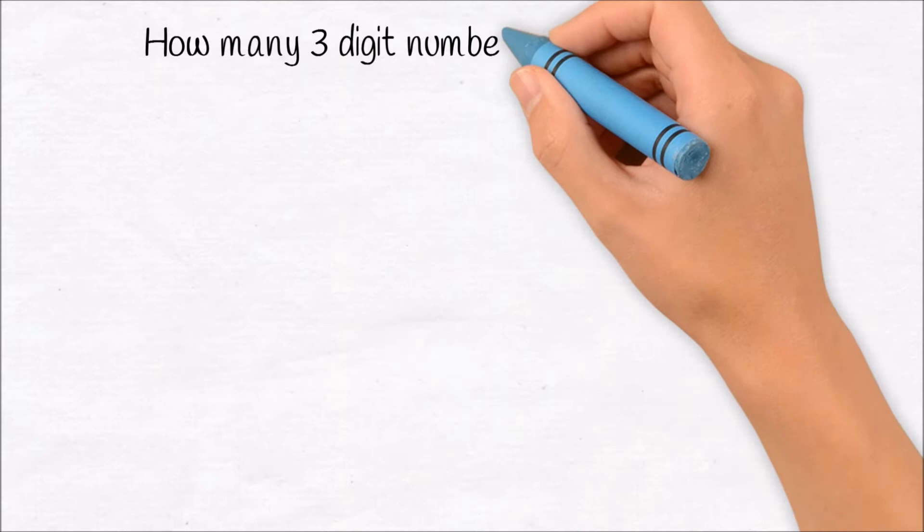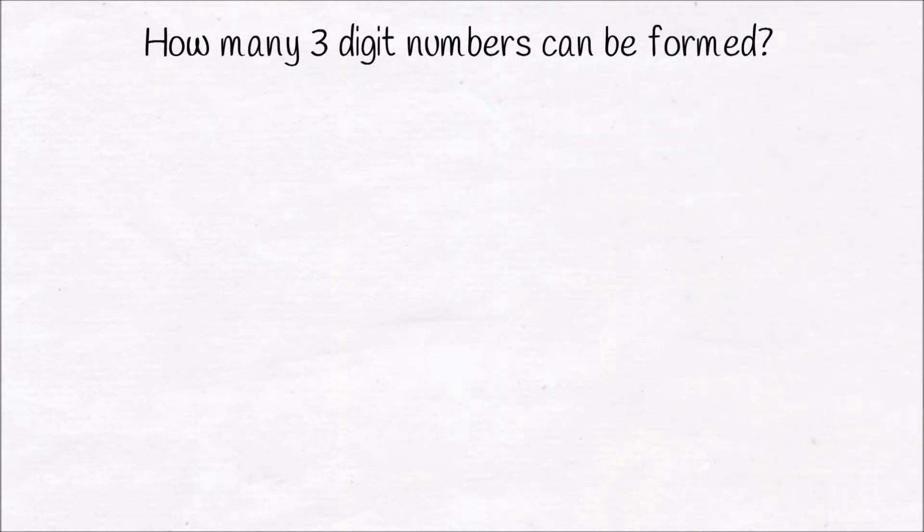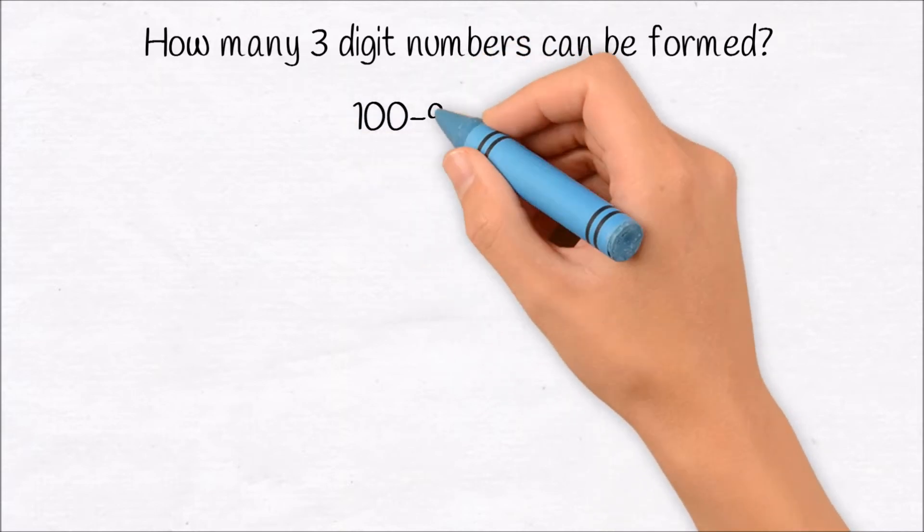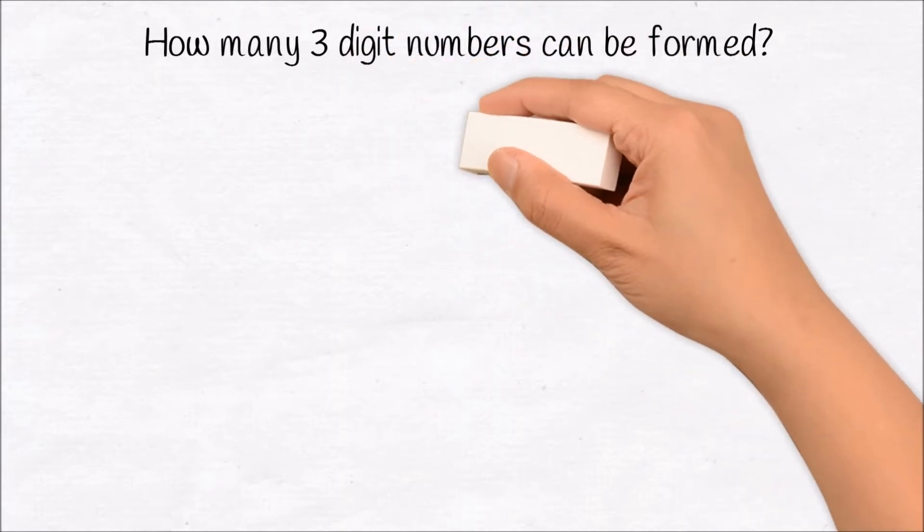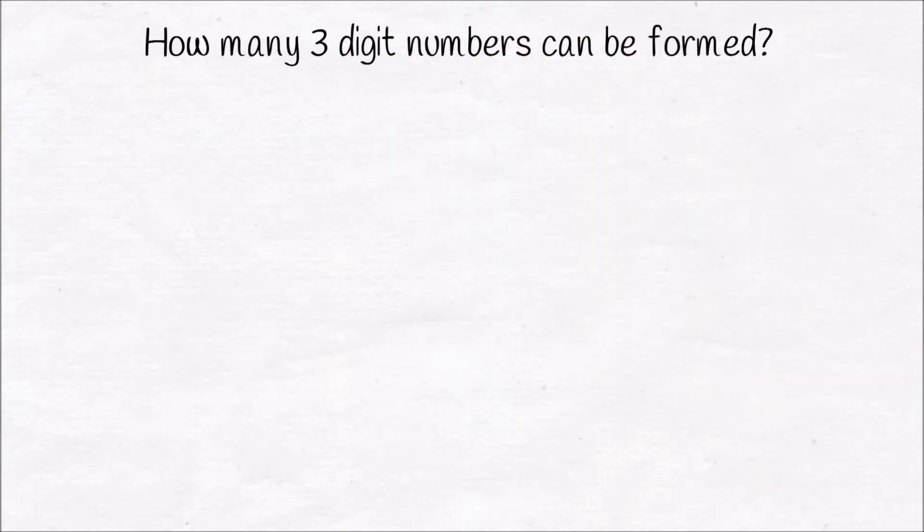Let me ask you one simple and basic question. How many 3-digit numbers can be formed? You can easily guess. 3-digit numbers start from 100 and end at 999. So there are such 900 numbers.